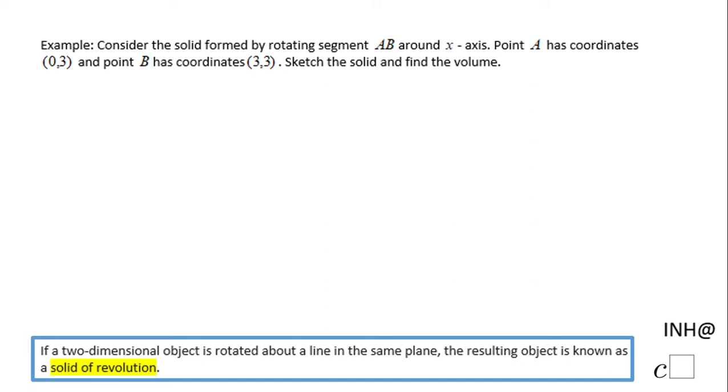Welcome or welcome back at I Need Help at C Squared. In this example, we have to rotate a segment AB around the x-axis. Point A has the coordinate (0,3), and point B has the coordinate